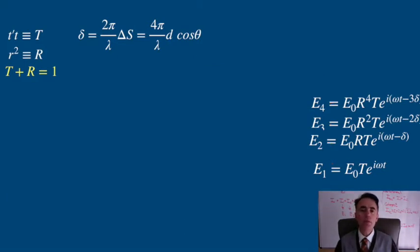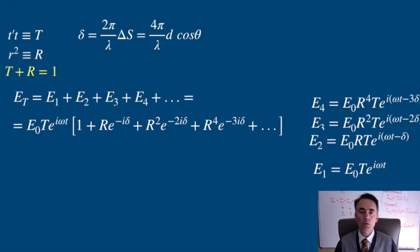Now it is interesting to calculate the total amplitude due to the superposition of all these beams of light, E sub total equal to E1 plus E2 plus E3 plus E4 and so on. Factoring out E0 T and e to the iωt, this is a geometric progression whose sum is given.